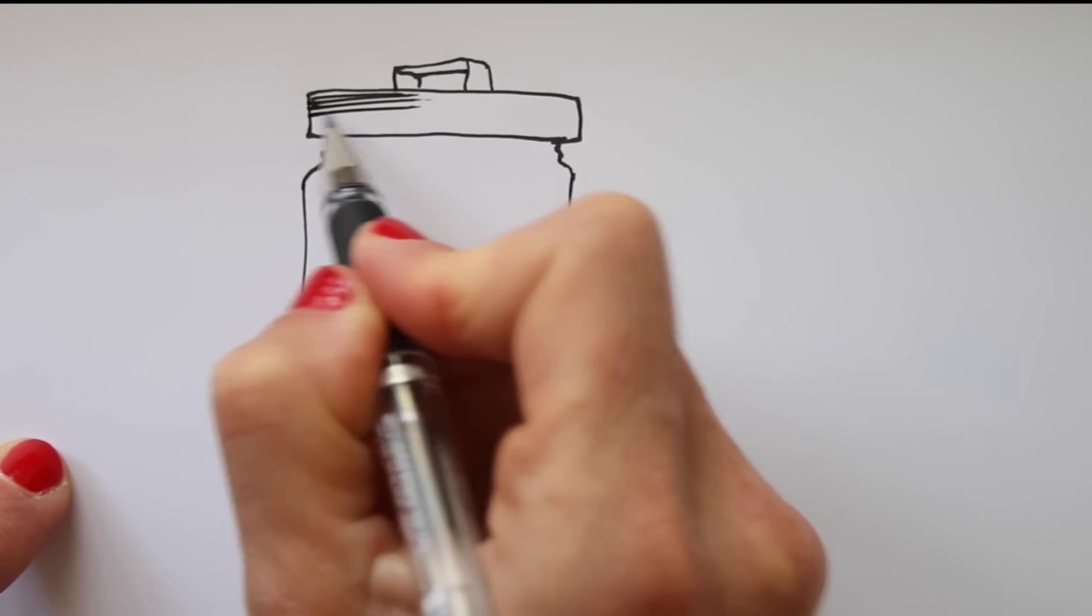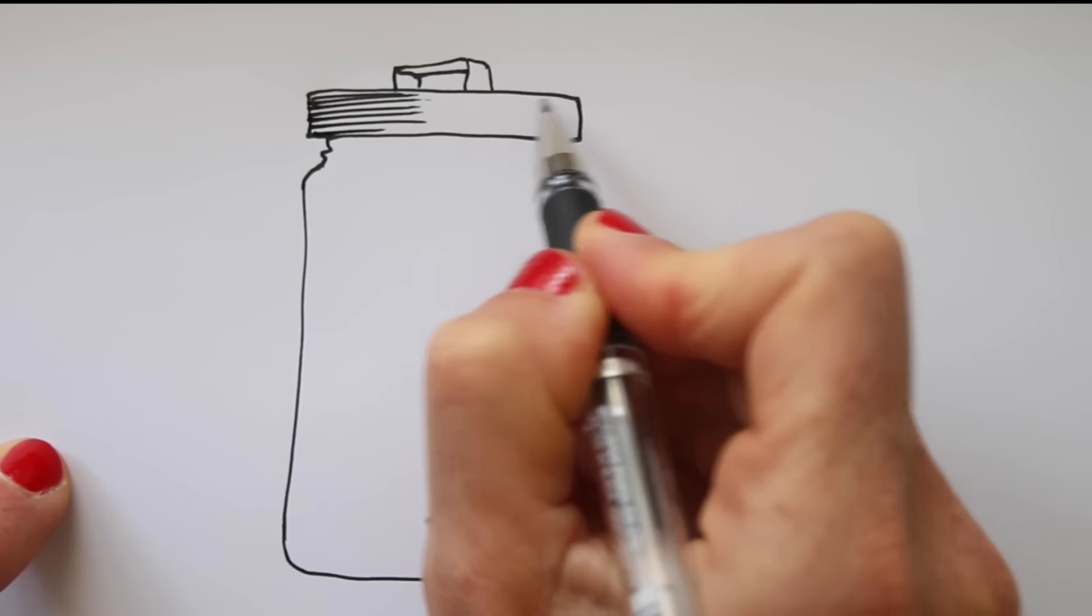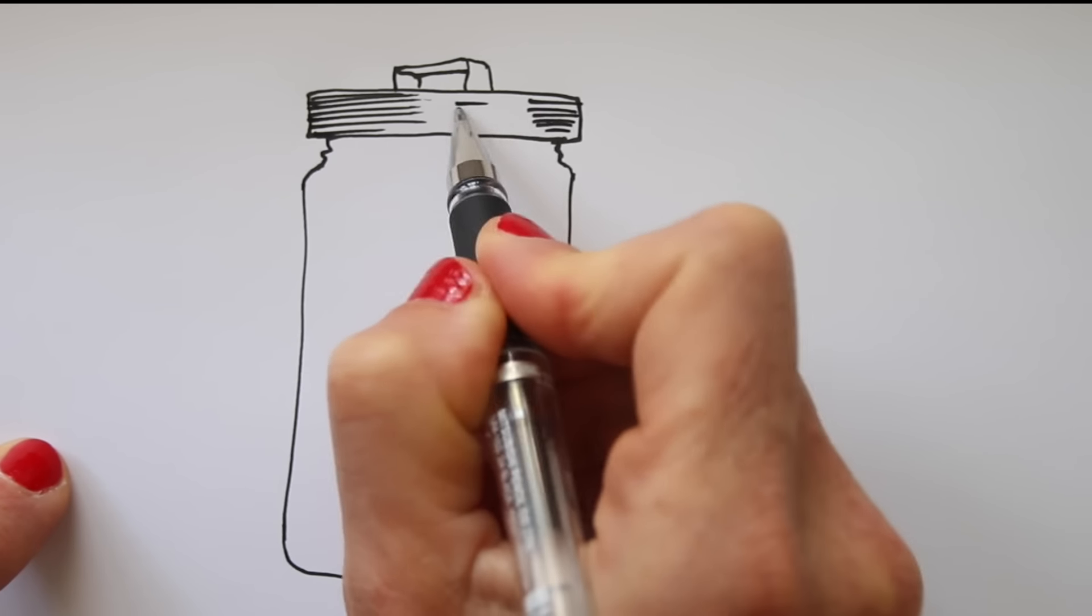On the lid of the jar, I draw lines and make sure to leave white space for the highlighted areas on the lid.